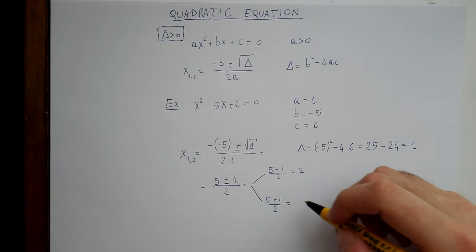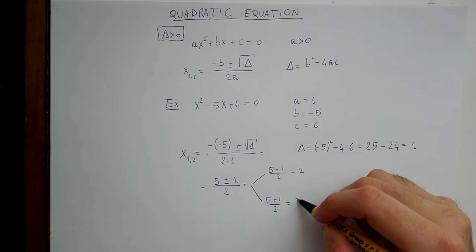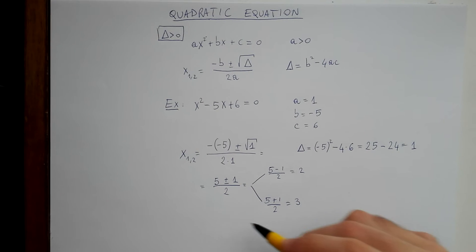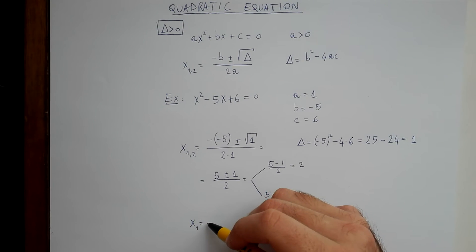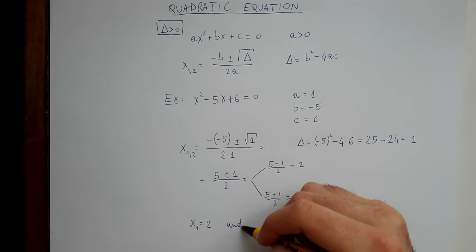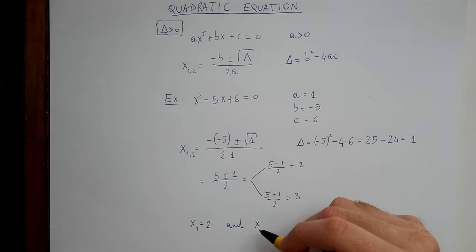5 plus 1, 6, divided by 2, 3. So we have that the solutions are x1 equals 2 and x2 equals 3.